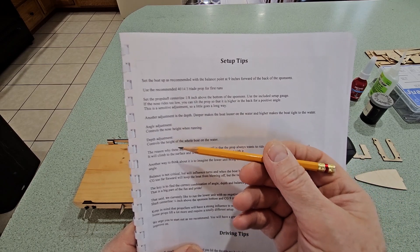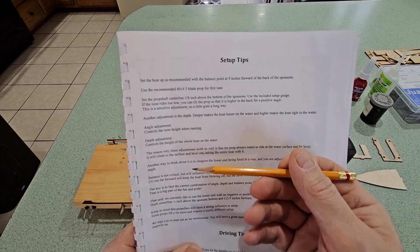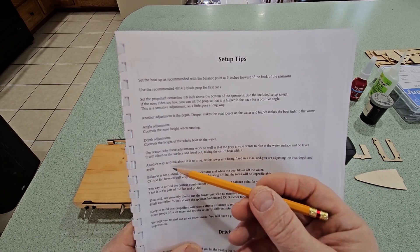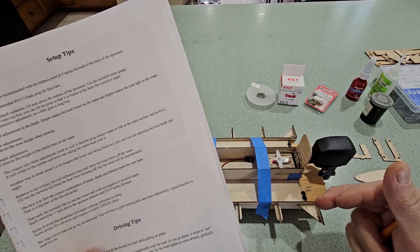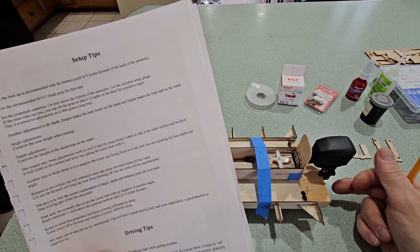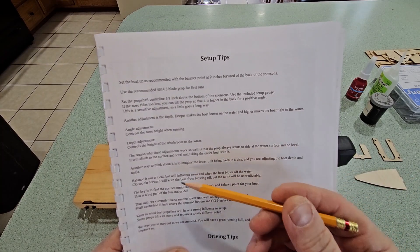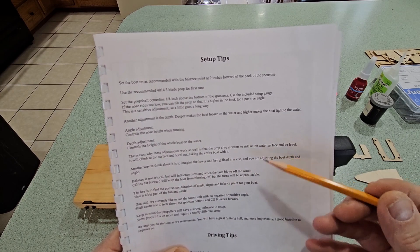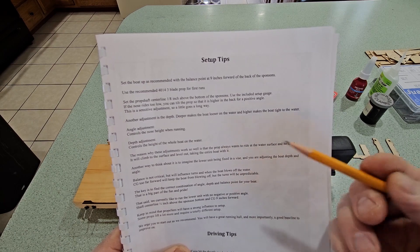The next thing to look at is the depth adjustment. So they're saying that controls the height of the whole boat in the water. And another way to think about it is imagine if this was fixed in a vice and you change that depth adjustment. So if you lower the height of the prop shaft centerline, you're going to raise the entire boat out of the water. It will run looser. And the reason they say the prop wants to ride at the surface level - the surface prop wants to come up and ride on the surface. And so it will climb to the surface, level out, taking the whole boat with it.